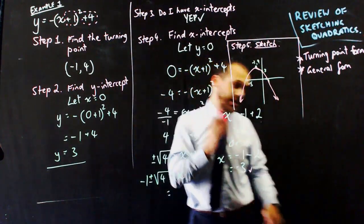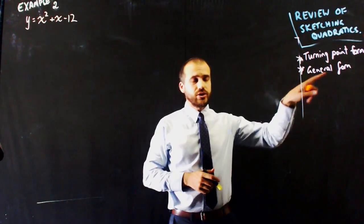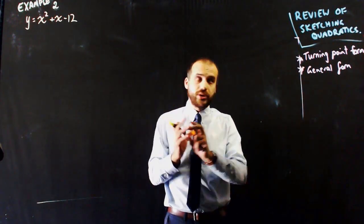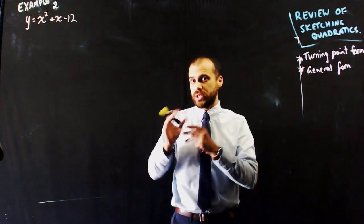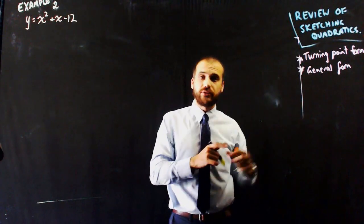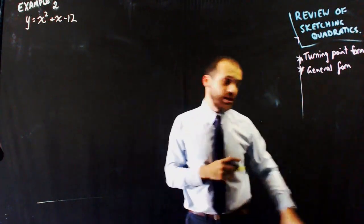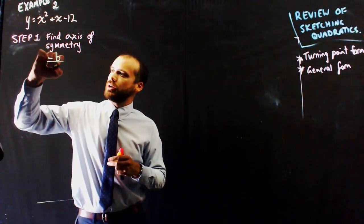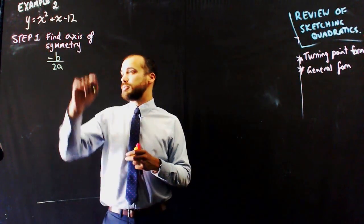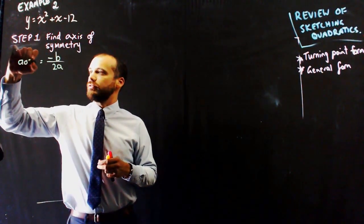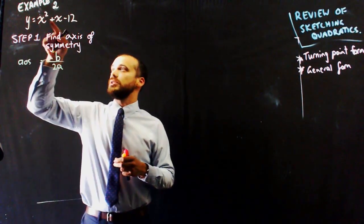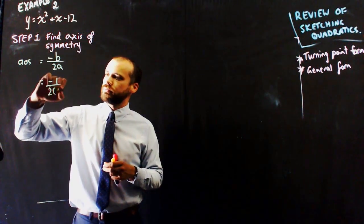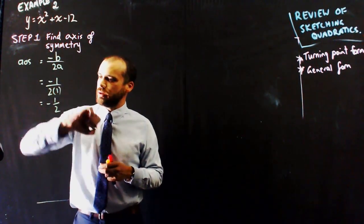Now I'm going to do the whole thing again in general form, but faster. This example is in general form. You could complete the square to turn it into turning point form and sketch from there, or you can sketch directly from general form. Step 1 is to find the axis of symmetry using the formula negative b over 2a. In this example, the axis of symmetry equals negative 1 over 2 times 1, which is negative one half.